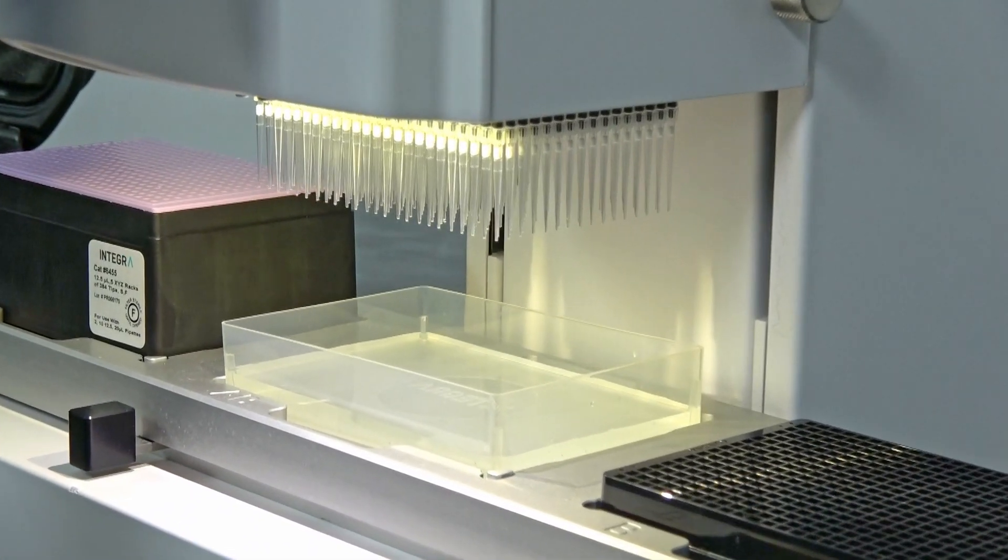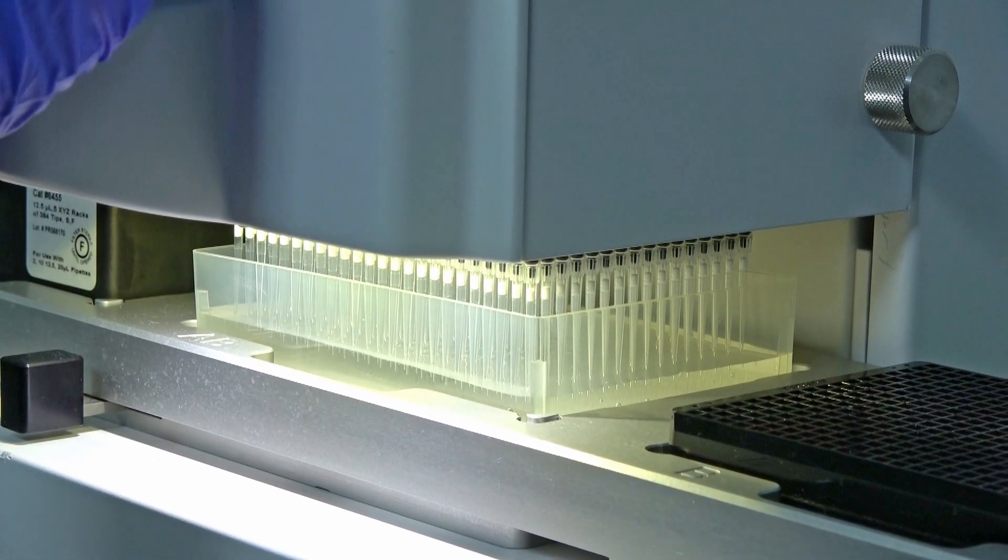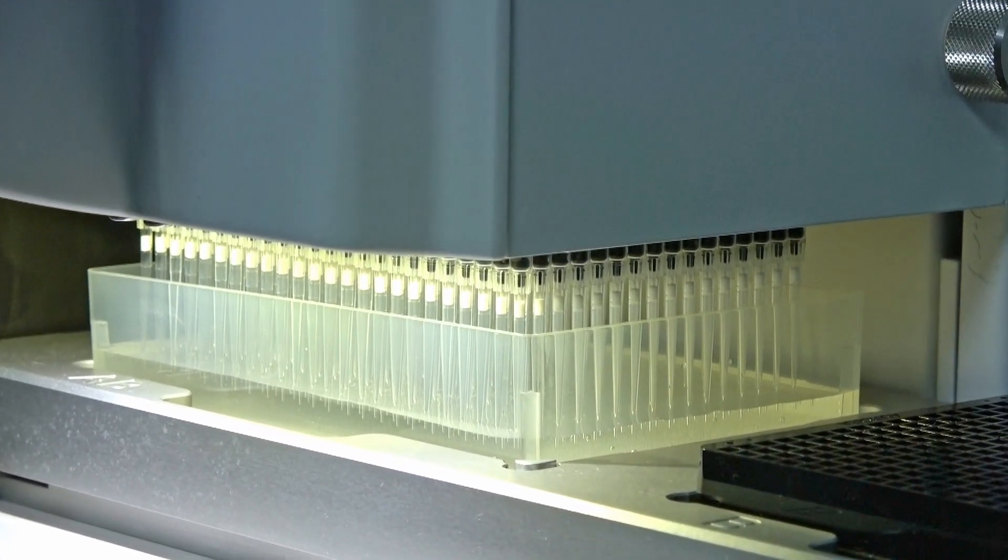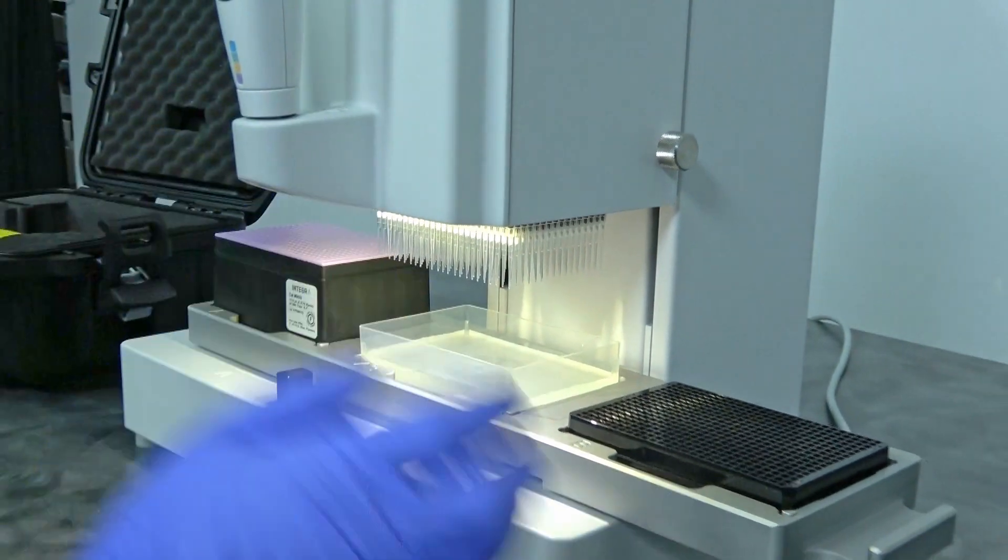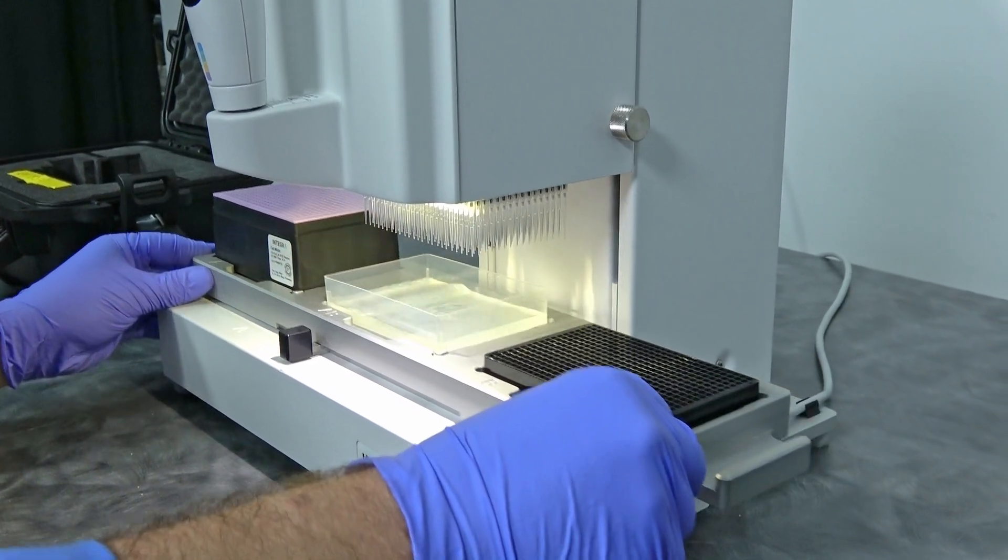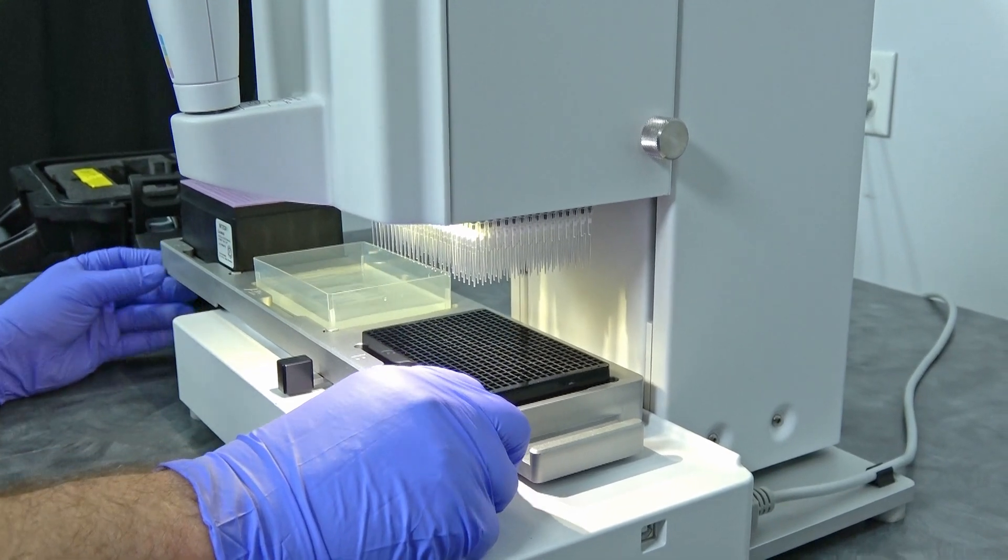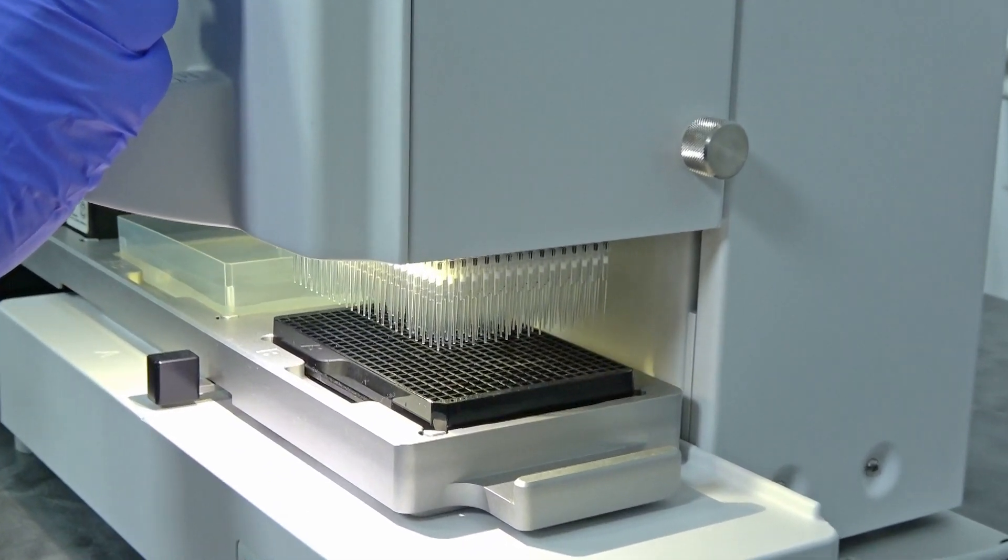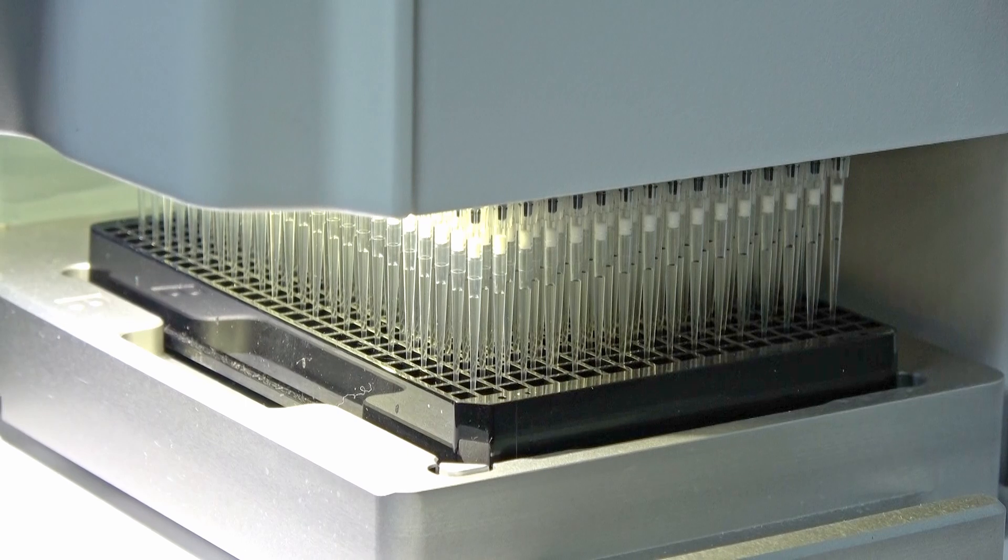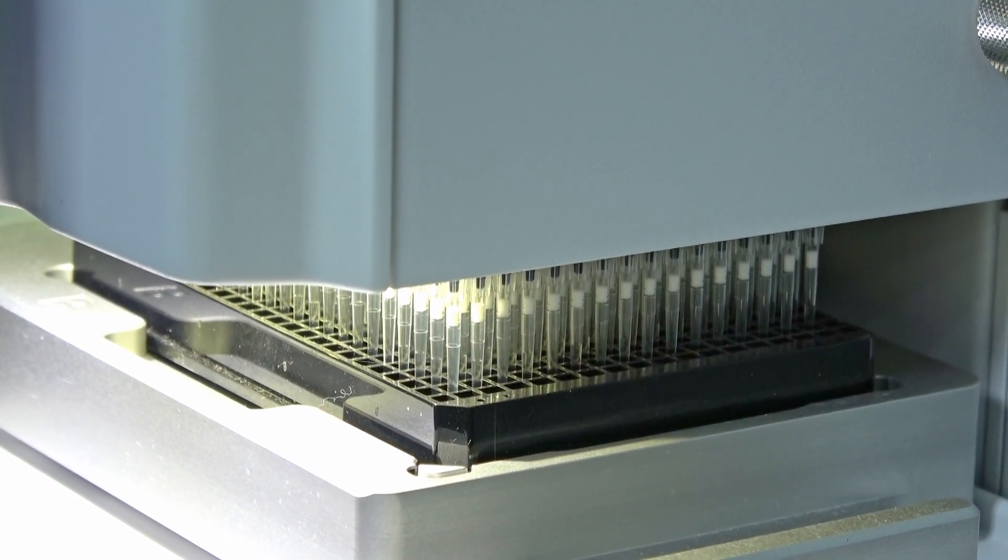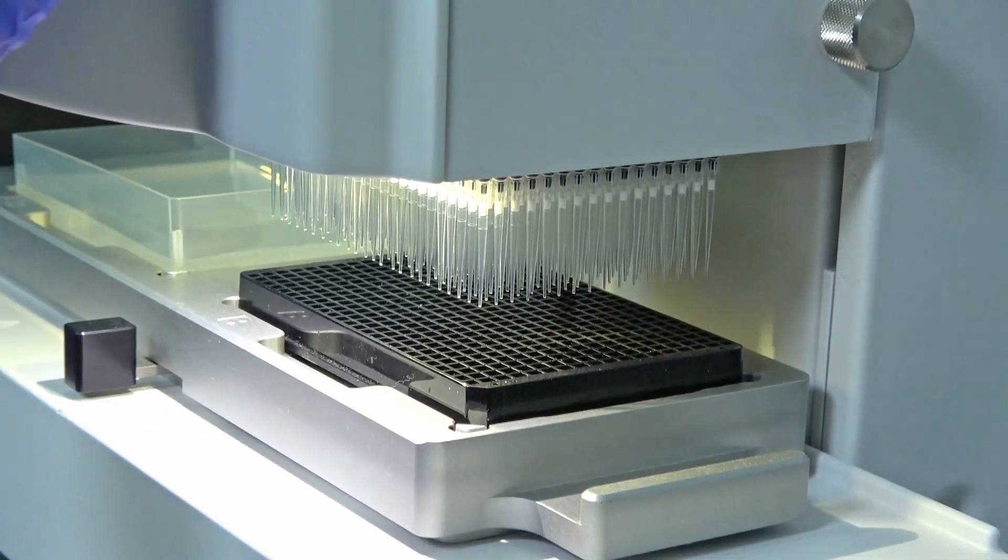So you're going to come down now and you're ready to aspirate some fluids. And once you get it down, all you got to do is hit the run and it's got us 10 microliters there. We're going to just lift it straight up and we're going to slide over to the microplate, lock it in, and then we're going to come down and we're going to hit run again. And you can see it dispensed everything into the wells.